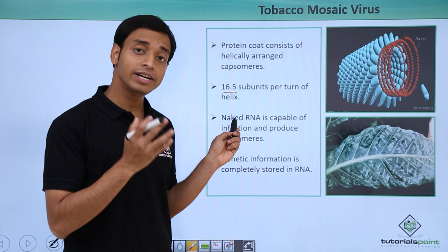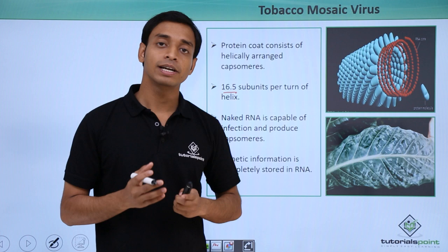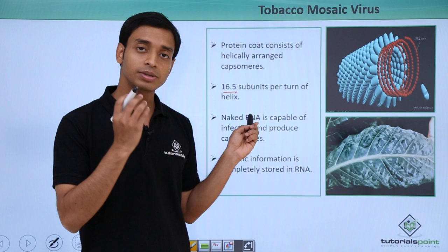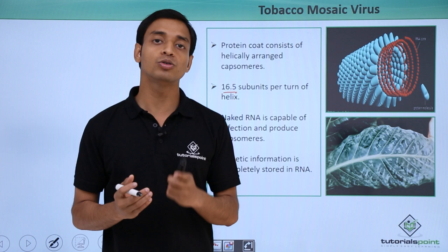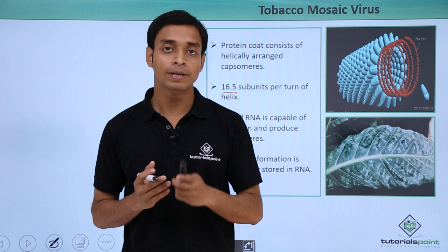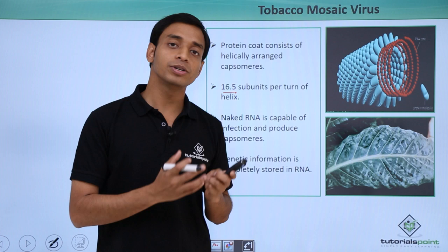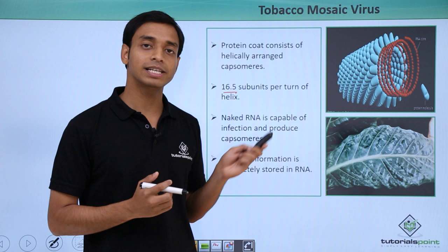A very interesting finding was that naked RNA — that is, RNA devoid of capsomers or proteinaceous structures — was capable of infecting a new host. It was also identified that this RNA was able to produce new TMV virus particles with capsomers. From this observation, it was concluded that all the genetic information, including the information to encode the capsomers, was present in the single-stranded RNA of the Tobacco Mosaic Virus.